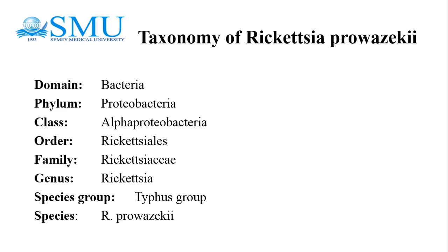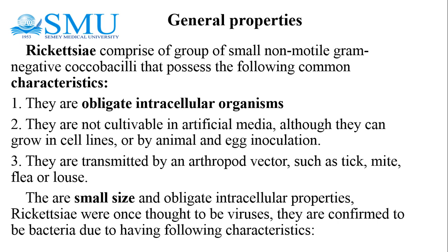Taxonomy of Rickettsia: Domain Bacteria, Phylum Proteobacteria, Class Alphaproteobacteria, Order Rickettsiales, Family Rickettsiaceae, Genus Rickettsia. Species groups include the Typhus group, with species Rickettsia prowazekii. General properties of Rickettsia: Rickettsia comprise a group of small, non-motile, gram-negative coccobacilli that possess the following common characteristics.